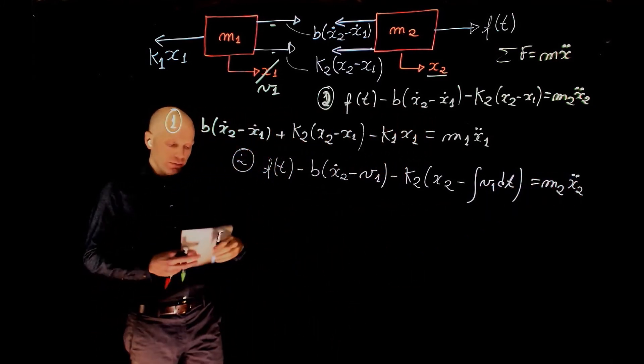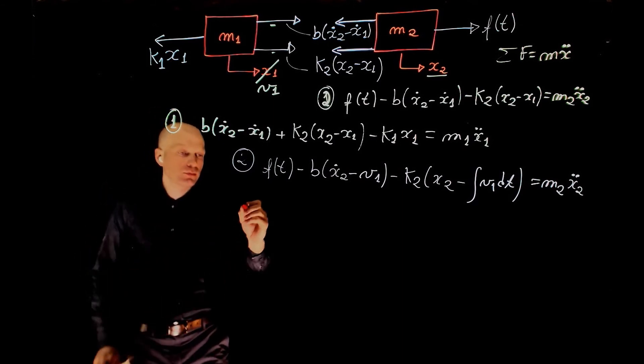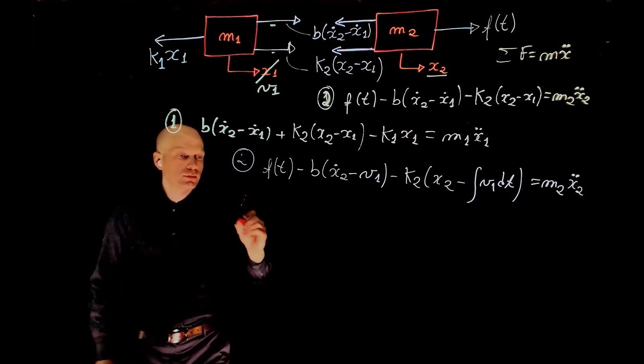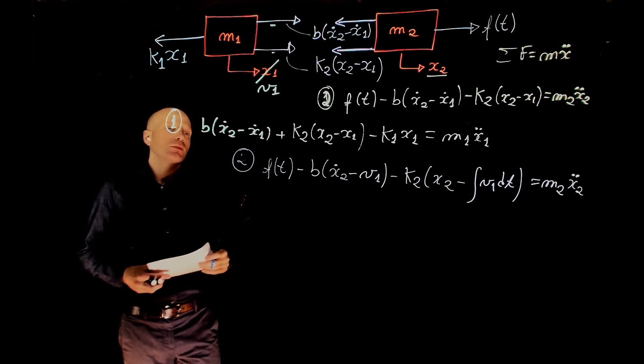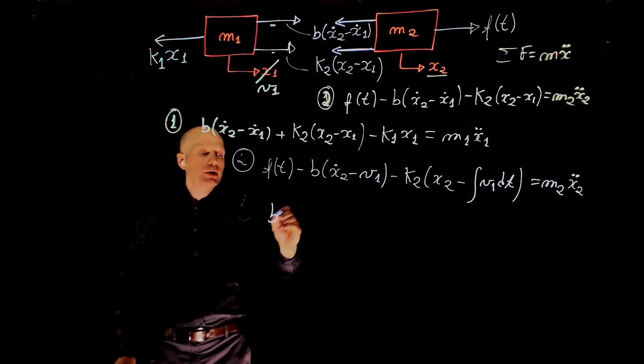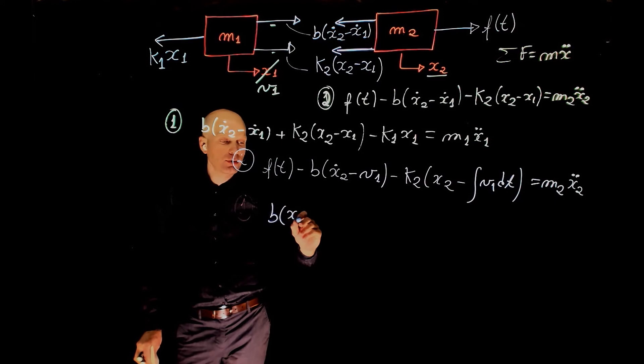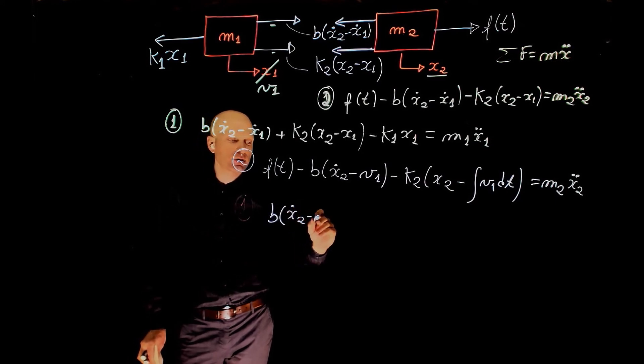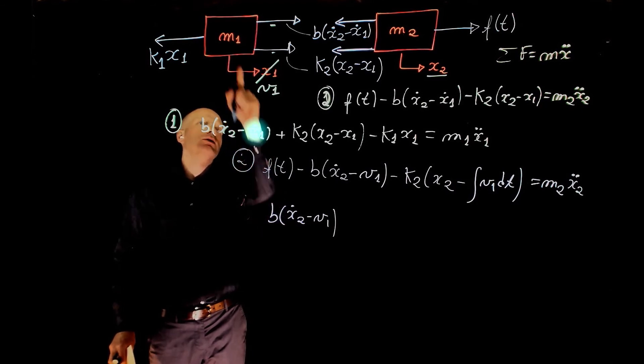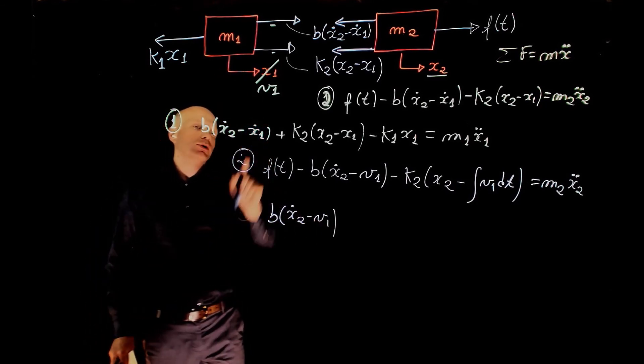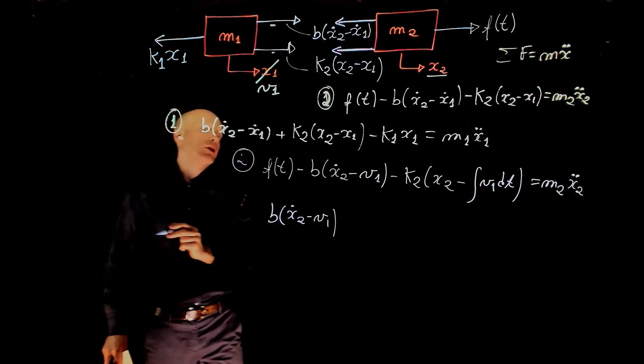Now let's look at equation 1. We have b times x2 dot minus V1. x2 dot is the speed of mass M1, that's V1, or we should say the velocity.